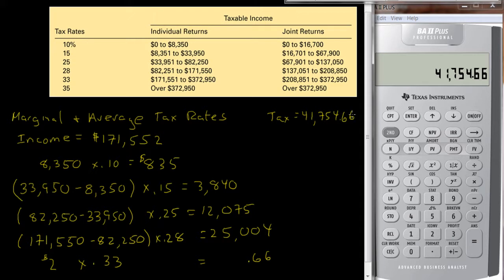Their marginal tax rate is 33% because that's what their last dollar was taxed at, their last dollar, or their last $2 were taxed at 33%, so their marginal rate is 33%. What's their average rate?